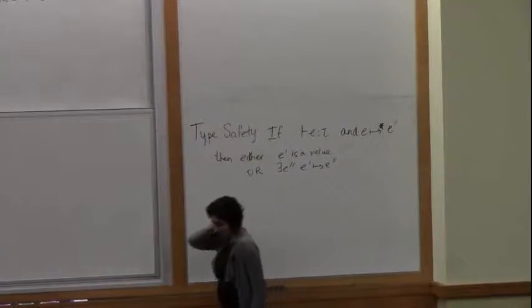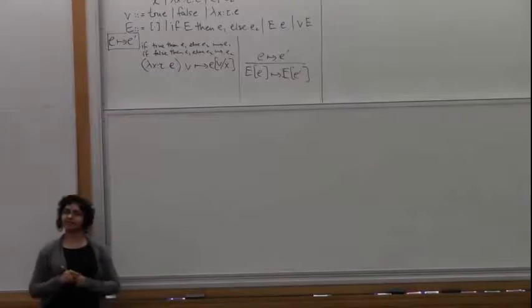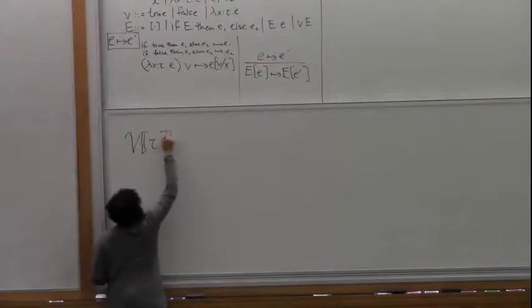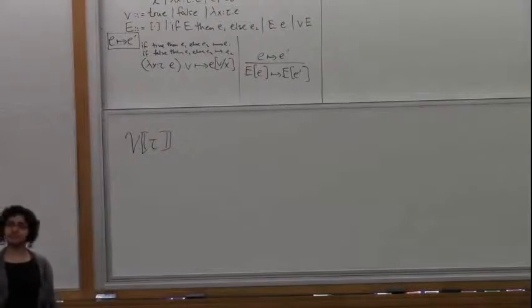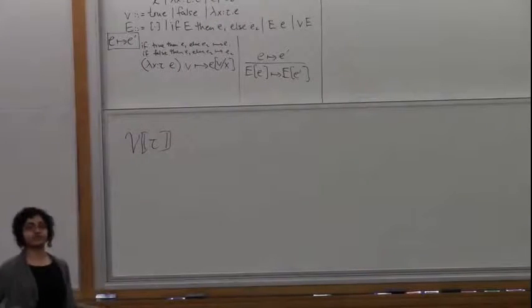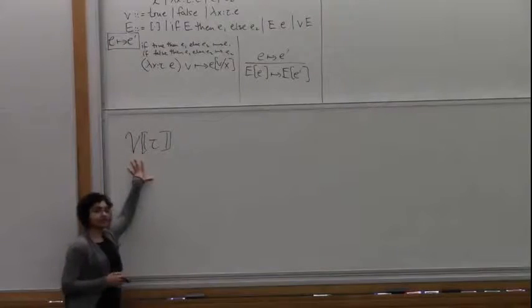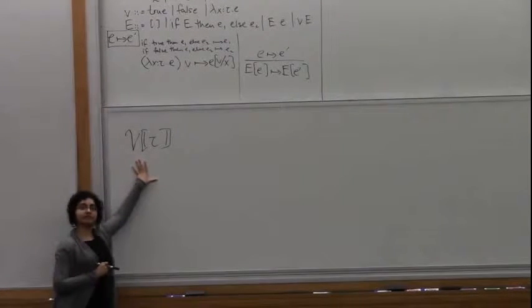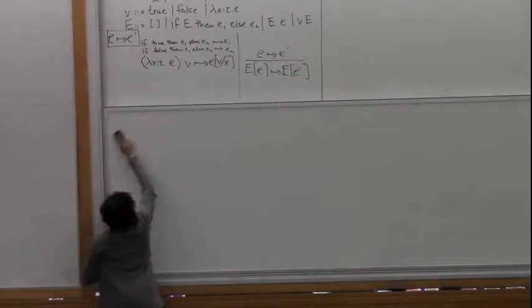So we're going to prove type safety. Here's how we're going to approach this using logical relations — a unary logical relation. We're going to define a value interpretation of types. For every single type in our language, by induction over the structure of types, we are going to write down when values of the language belong to that type. We're sort of building a model of types as sets.